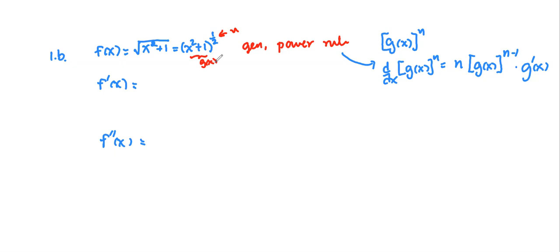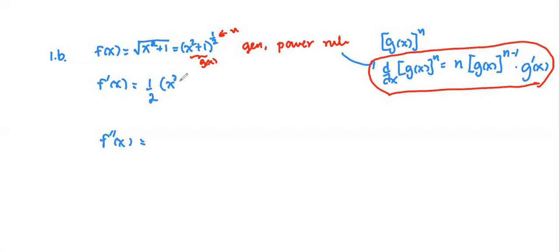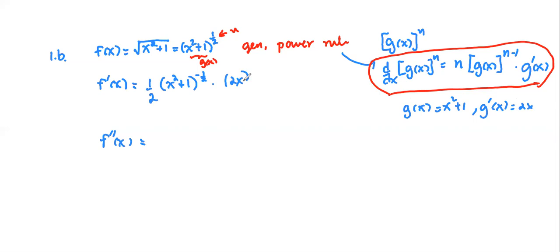Go ahead and put in the chat what you get for the first derivative. The f prime: the power is one half, g(x) is x squared plus one, so the power subtracted by one becomes negative one half, multiplied by g prime. Since g(x) is x squared plus one, g prime is 2x. So we multiply by 2x. The rule is applied correctly. Simplifying, the two and two cancel, giving x times x squared plus one to the power negative one half as the first derivative.